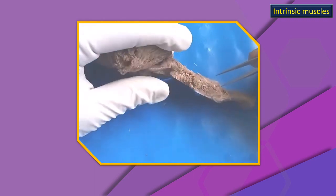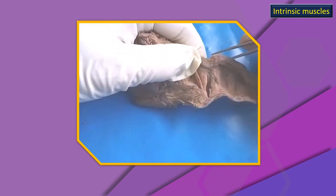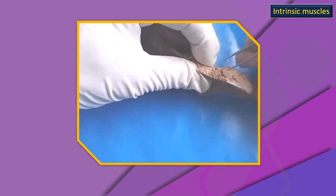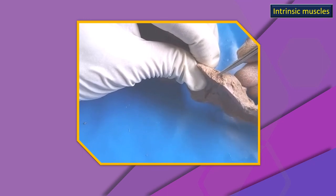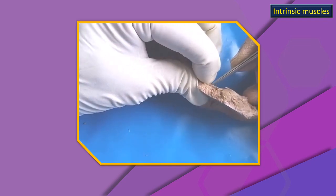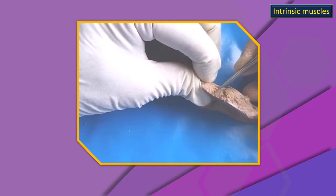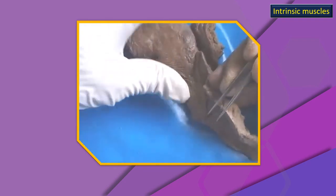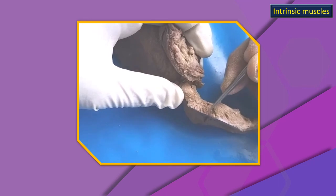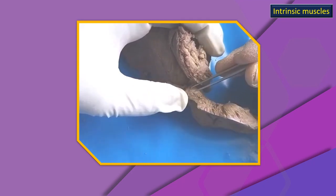A little above the posterior cricoarytenoid, you can see a small lump of muscle behind the arytenoid cartilage. The lower part of the muscle has transverse fibers — that is the transverse arytenoid. The upper part is increasingly oblique, meaning the oblique fibers are more superficial. The oblique fibers go roughly towards the epiglottis and the aryepiglottic fold. This muscle is the oblique arytenoid, and its continuation upwards is the aryepiglotticus muscle.